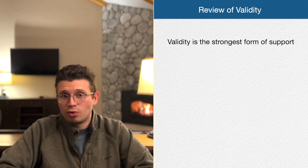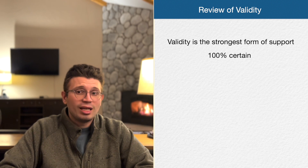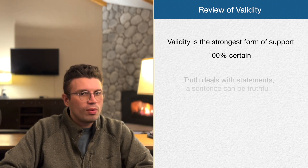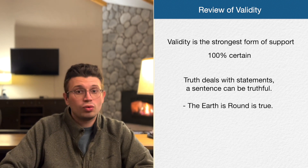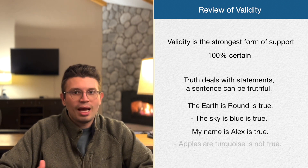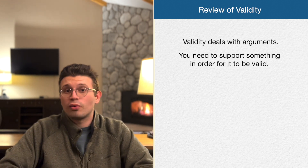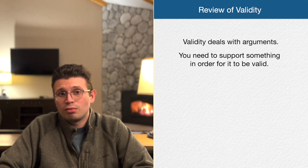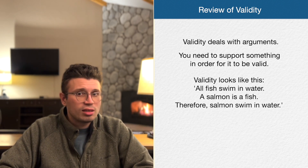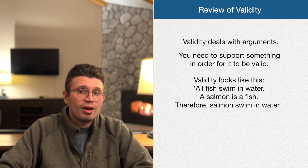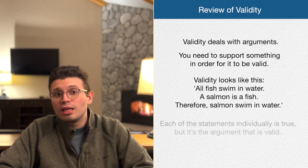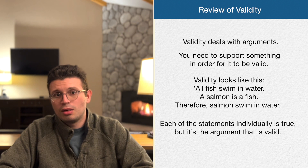Validity is basically the strongest form of support — it is when something is 100% certain. Remember the difference between validity and truth: truth deals with statements (e.g., 'the earth is round' is true), while validity deals with arguments. You need to support something in order for it to be valid. Validity looks like this: 'All fish swim in water; a salmon is a fish; therefore salmon swim in water.' We have support, each statement is true, and the argument is valid.